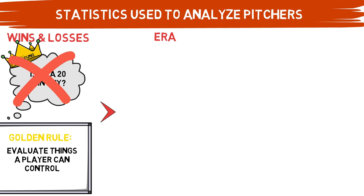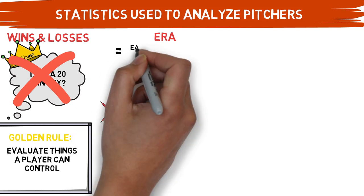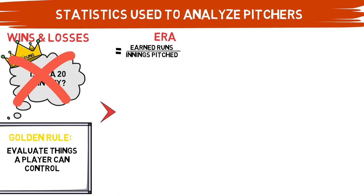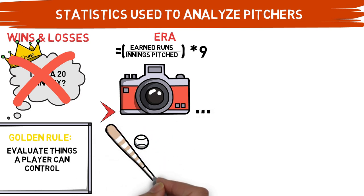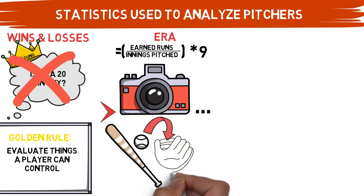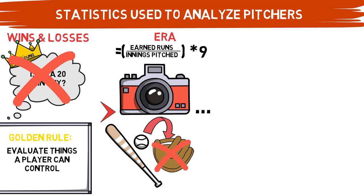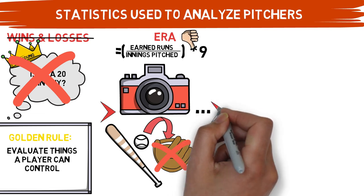Next, let's tackle another popular yet troublesome statistic: ERA, or Earned Run Average. ERA is calculated by taking your earned runs over your innings pitched and multiplying that number by 9. It is intended to take a snapshot of how many runs a pitcher would allow on average every 9 innings. But the issue is that you are including the defense's ability to stop runs in this pitching statistic. ERA does a terrific job of telling us how many runs were scored while a pitcher was on the mound, but that number depends on the pitcher's defense, some amount of luck, and even the order events occurred. For example, if a pitcher gives up two singles then a home run, that equals three runs — but if they allow one home run and then two singles, that's only one run for the same exact results.